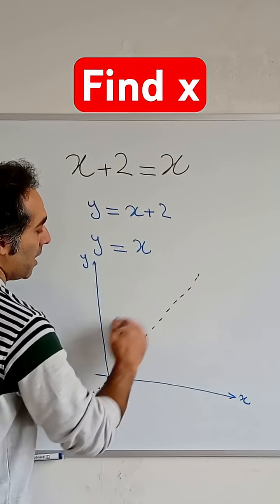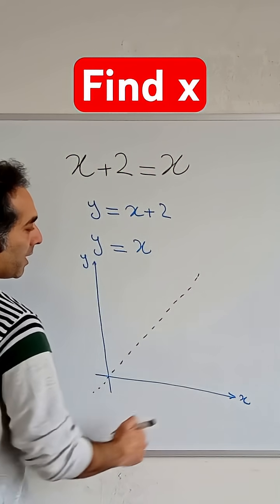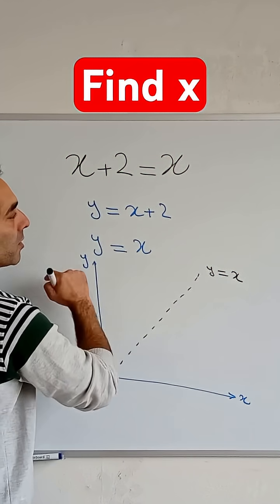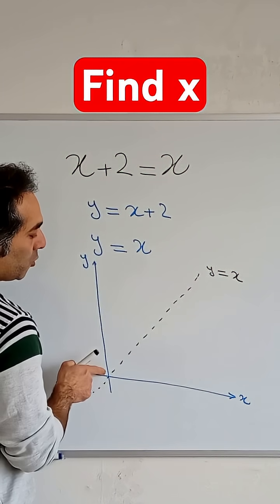But y = x + 2 is just two units at the top of this diagram, exactly parallel to the y = x line.